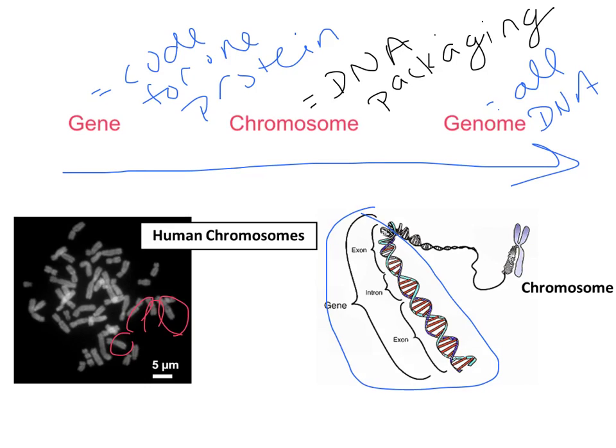So the gene is the portion coding for one particular protein. The chromosome is made up of lots of genes — you can have thousands of genes on one chromosome. And then the genome is going to be all of the chromosomes in that organism. For instance, the human genome has 46 chromosomes.